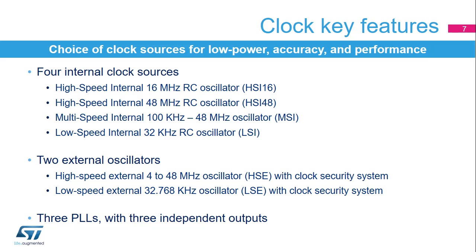The RCC offers a large choice of clock sources, which can be selected depending on the low power, accuracy, and performance requirements. STM32L5 microcontrollers embed four internal clock sources: a high-speed internal 16 MHz RC oscillator, or HSI16; a high-speed internal 48 MHz oscillator, or HSI48; a multi-speed internal oscillator, or MSI; and a low-speed internal 32 kHz RC oscillator, or LSI.